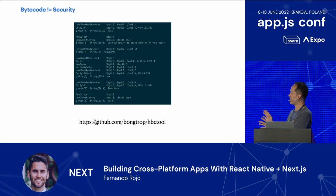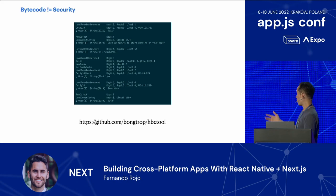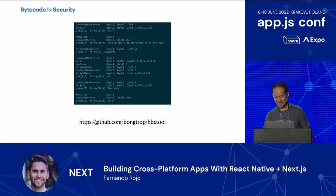Another point: some people want to use Hermes because the bytecode is considered somewhat secure to protect your JavaScript bundle — the bundle won't be plain text. But that's not really true. Bytecode can be decompiled, just like a Java engine. There's actually a tool that can decompile your Hermes bundle back to something readable in plain text. So I would say bytecode is not true security.